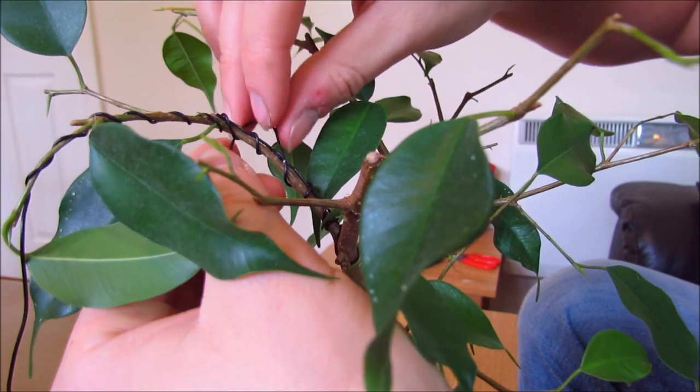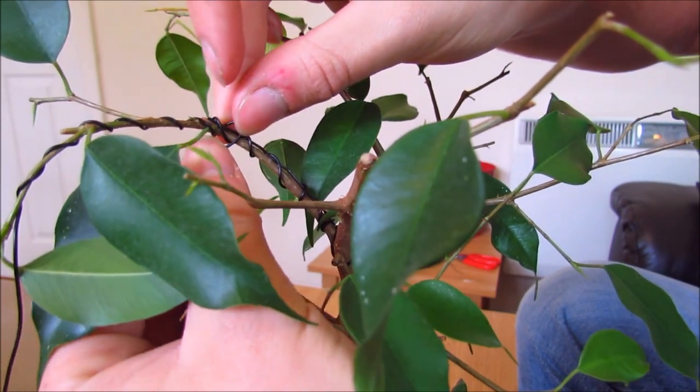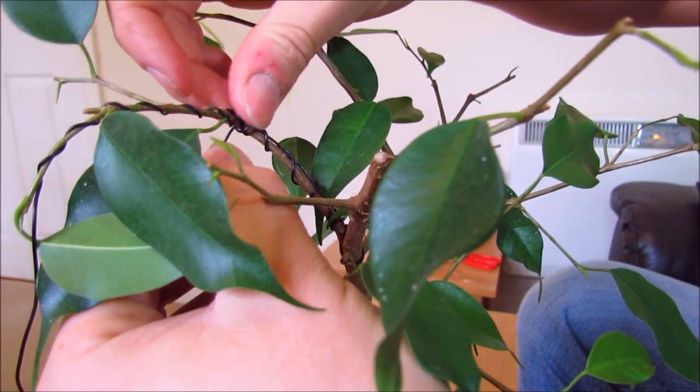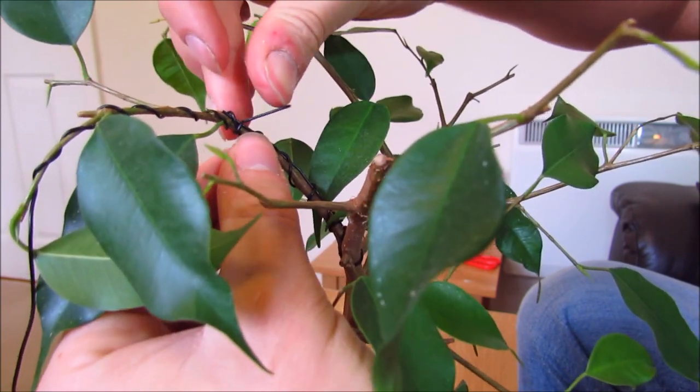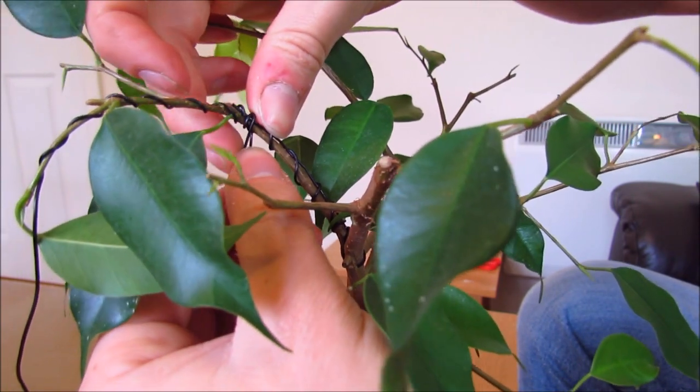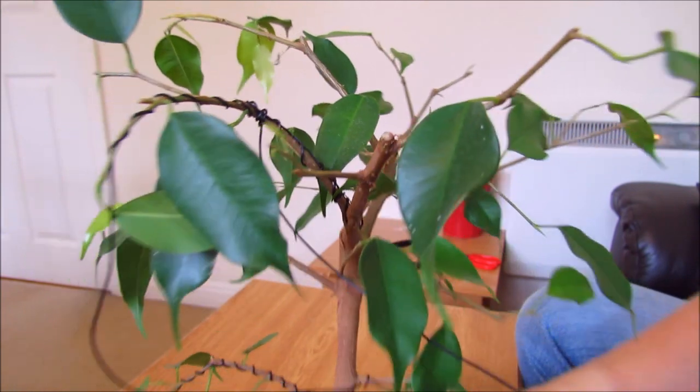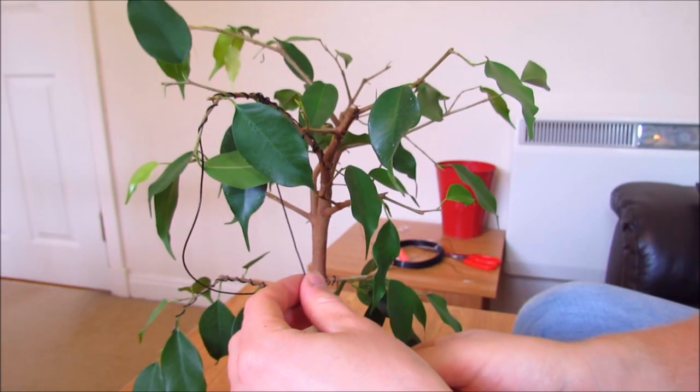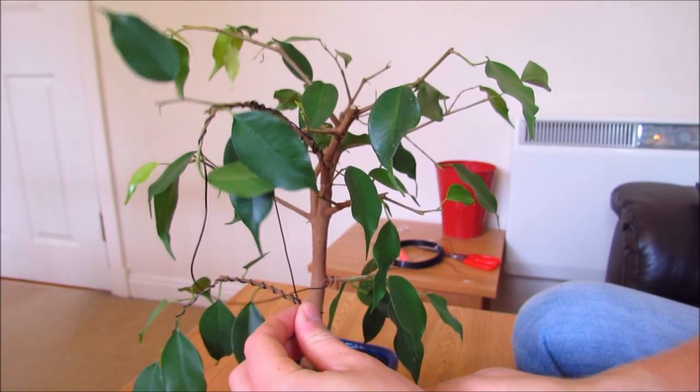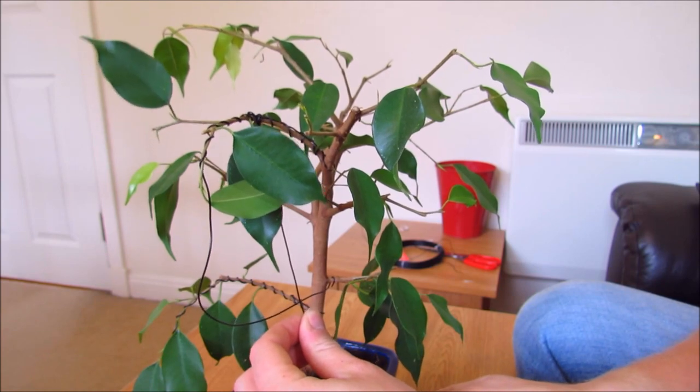So to anchor this one down, I'm just going to tie it off here where it starts to thin slightly, basically just at the end of the thickest part of it. Just going to wrap the wire around like so. It doesn't need tied, it should be strong enough just wrapped. And then I've got this piece of wire here and I'll pull that down as you can see, getting a nicer shape when I'm pulling that down.